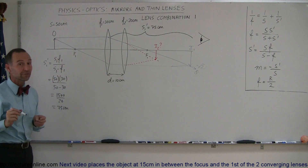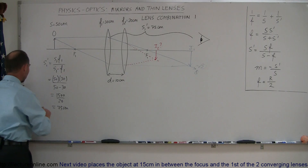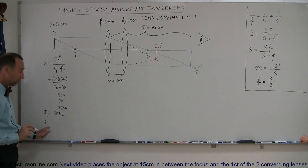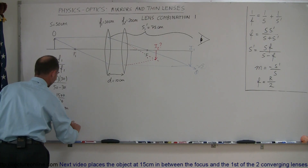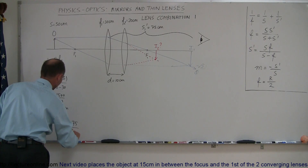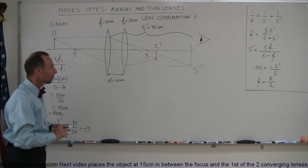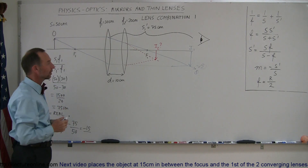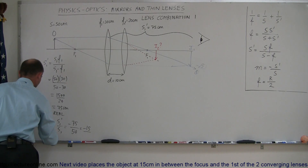The fact that this is a positive 75 centimeters means it's a real image forming to the right of the lens, so image 1 is real. The magnification of image 1, M1, equals minus S1 prime over S1, which is minus 75 divided by positive 50, equal to minus 1.5. That means the size of the image is 1.5 times the size of the object, and the negative means it is inverted.